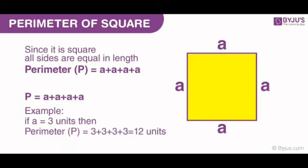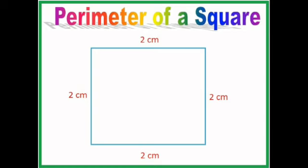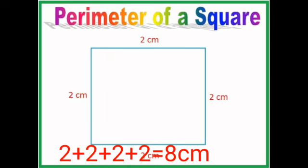Here, one side of the square is 3 centimeters. That is 3 plus 3 plus 3 plus 3, equal to 12 centimeters. 12 centimeters is the perimeter of this square.